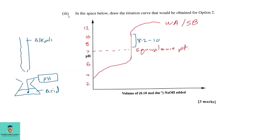For C part three, draw the titration curve for option two. In option two we are titrating a weak acid with a strong alkali. The alkali is in the burette and the acid is in the conical flask. We are starting at a low pH, and as sodium hydroxide is added to the acid, the pH will rise. This is the titration curve for a weak acid and a strong base.